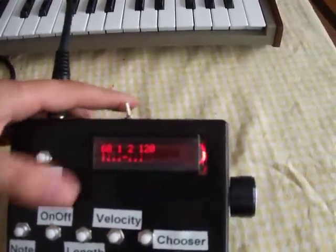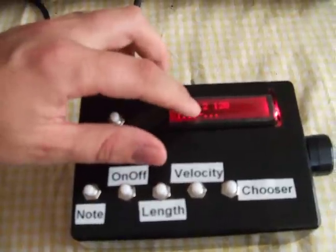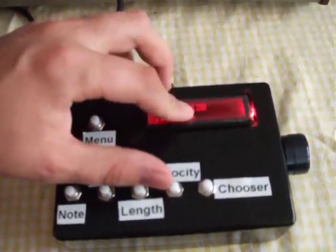The first number is the note, the second is if it's on or off, then length, and velocity.